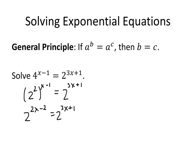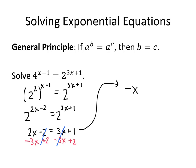Now after doing that work we realize the bases are the same, so we can get rid of them and set the exponents equal to each other. 2x minus 2 equals 3x plus 1. Let's subtract 3x from both sides and add 2 to both sides. That gives us negative x on the left and positive 3 on the right, so the solution is x equals negative 3.